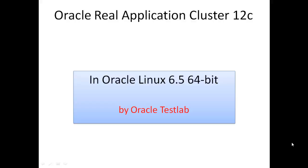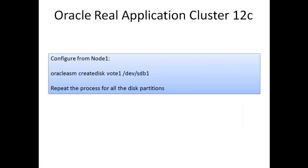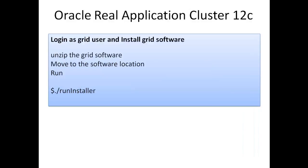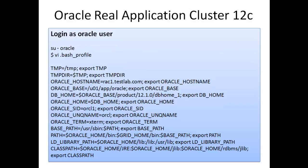Hello viewers, welcome to the video tutorial about Oracle Real Application Cluster in 12c database on Oracle Linux 6.5 64-bit OS. In this series we have already completed our pre-installation tasks, installed Oracle Grid Infrastructure, and now we have come to installation of Oracle database software and creating the database. Our ASM disk is configured and Grid Infrastructure is ready.